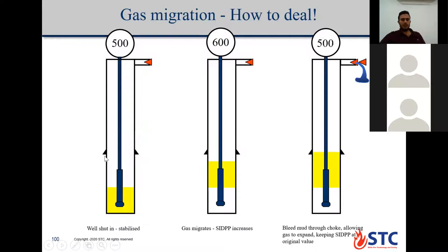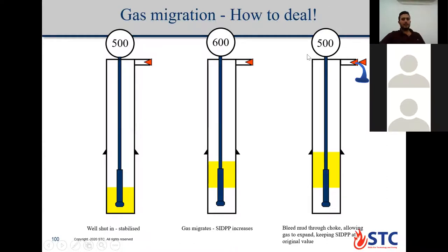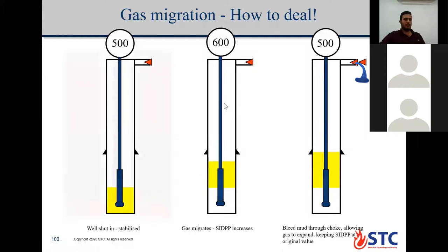If we have gas migration, pressure will increase from 500 to 600. To return to the normal situation, we need to start bleeding from the choke — bleeding some fluid — causing the drill pipe pressure to come back to its normal pressure of 500 psi.